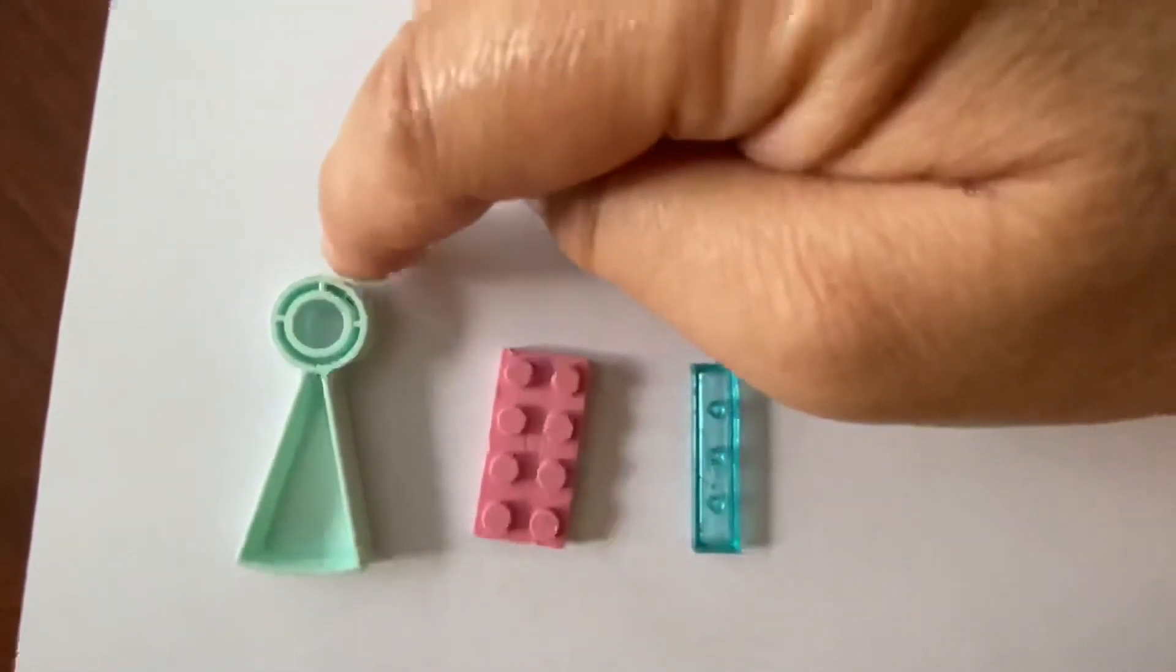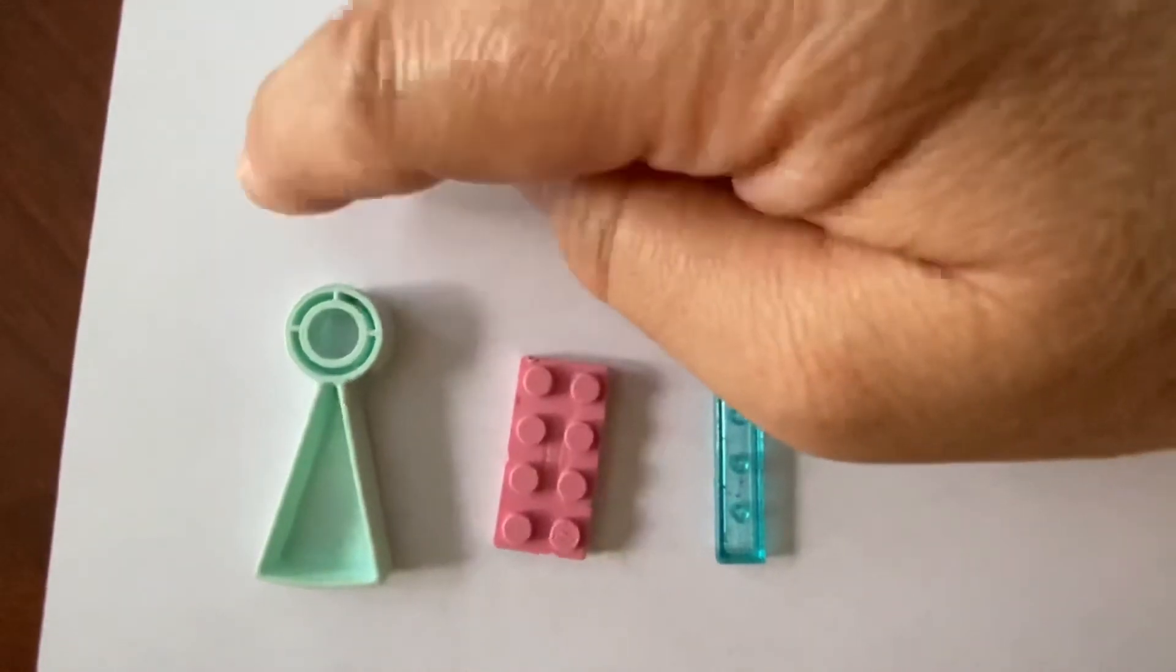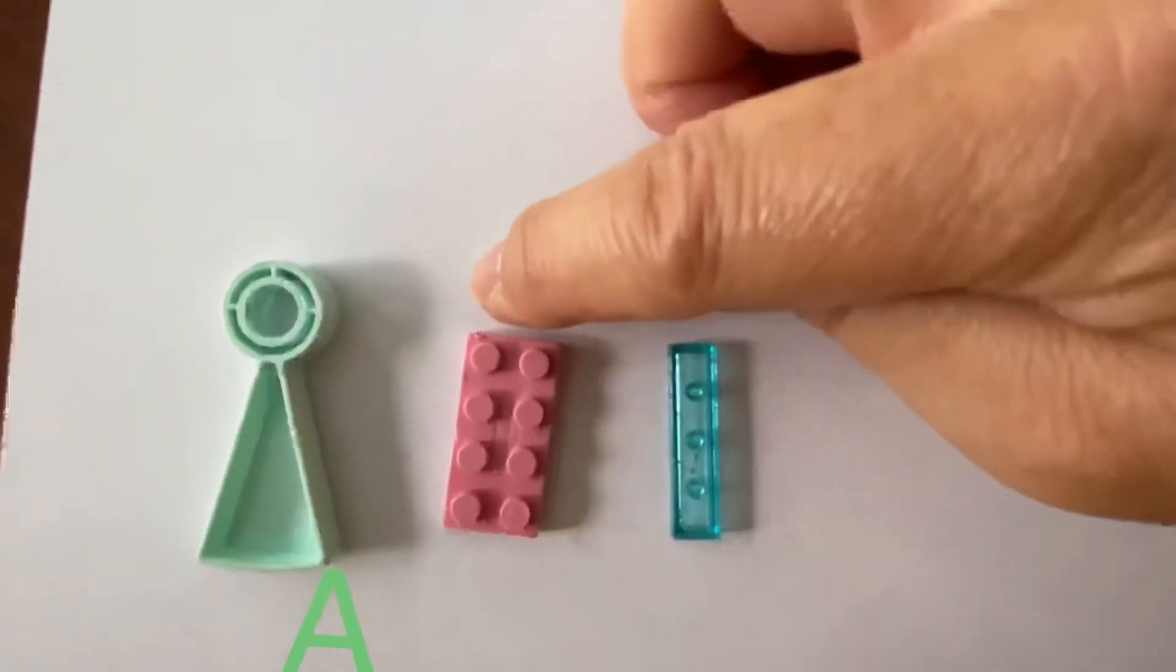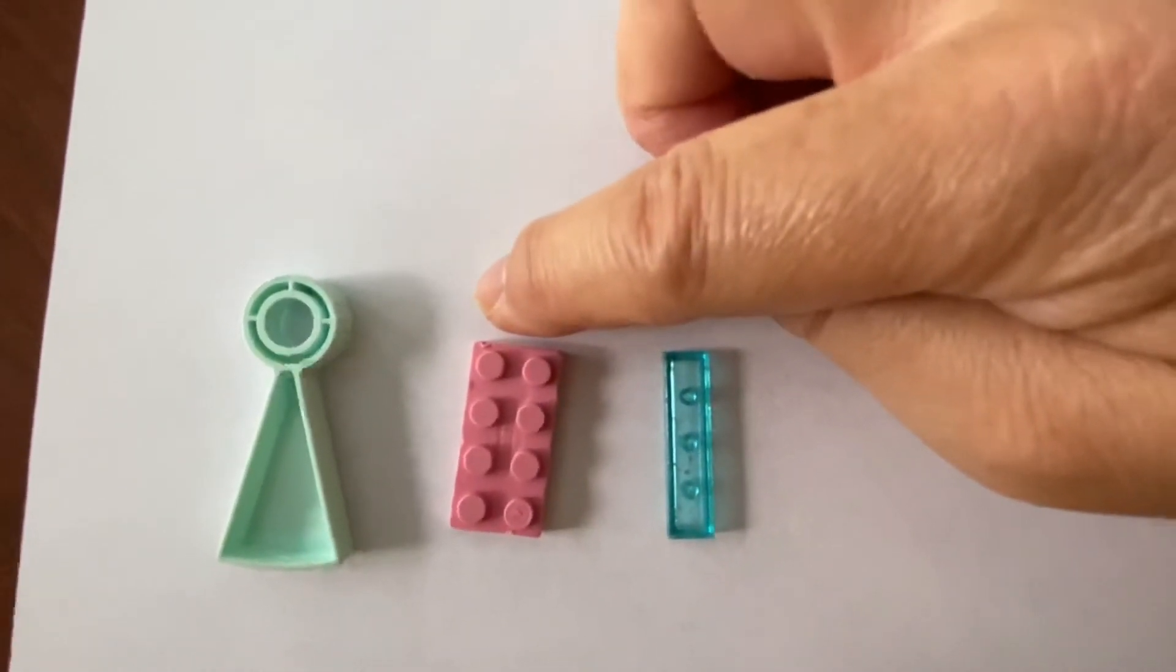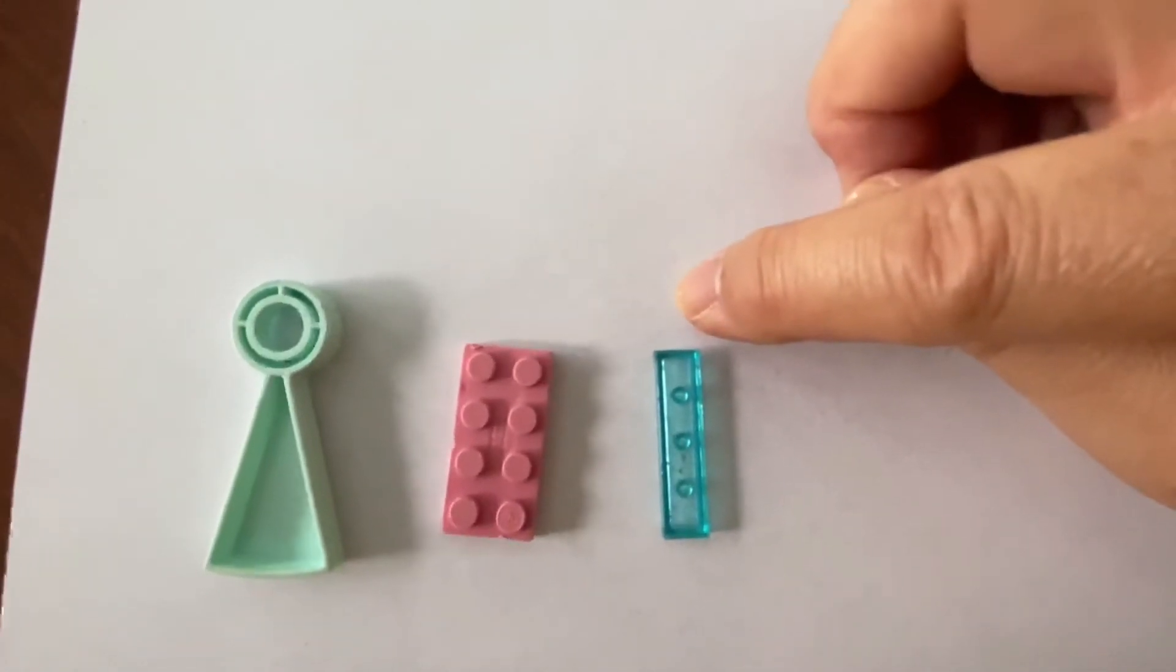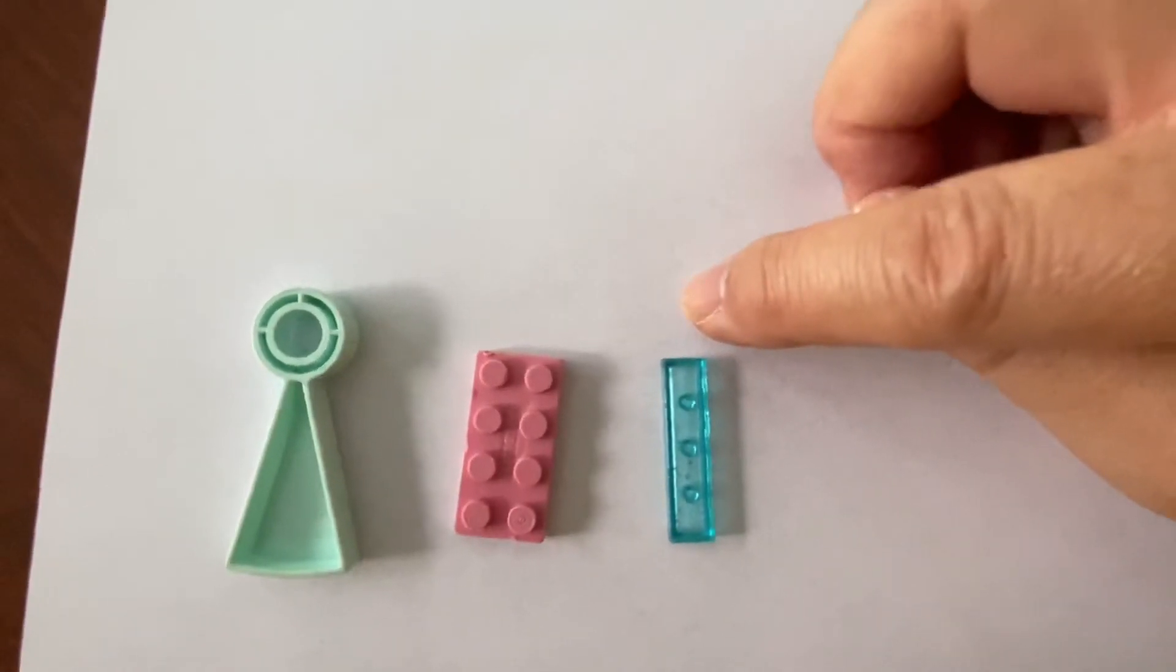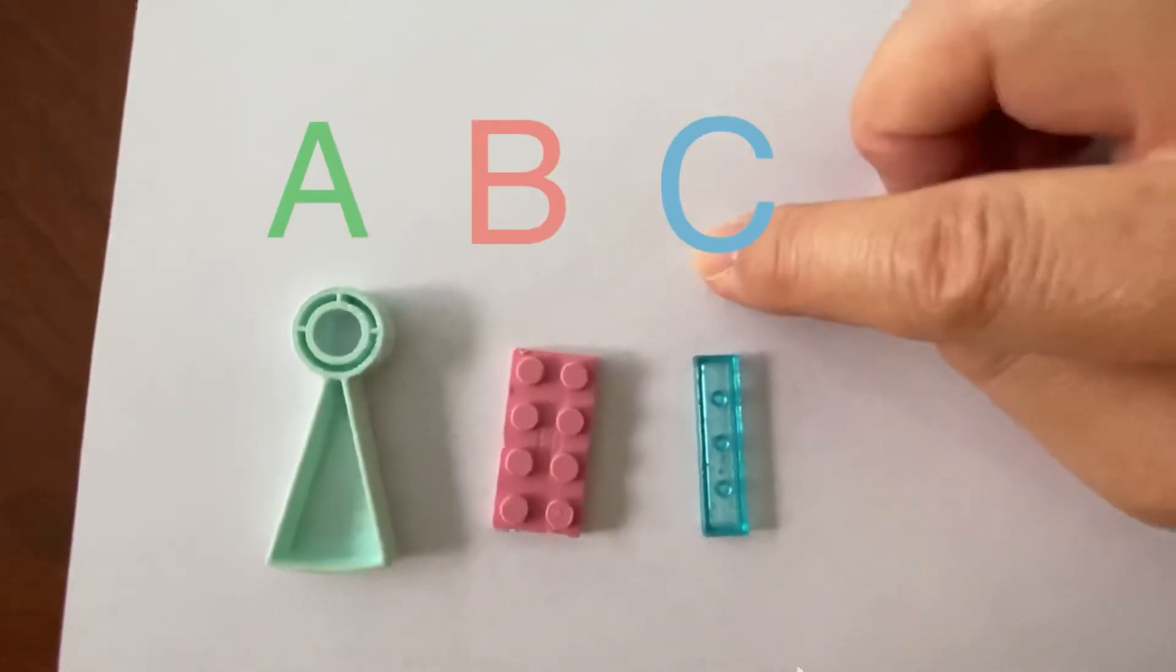This first one, what letter would it be called? Yes, A. This pink block would be what letter? Yes, B. And this blue block, what letter do you think? A-B-C. Yes, this block we'll call C.